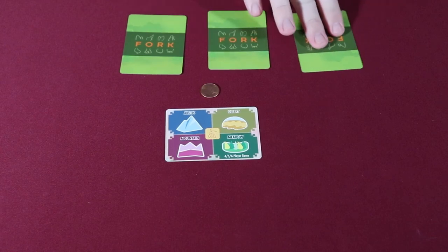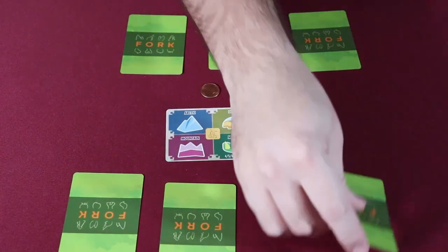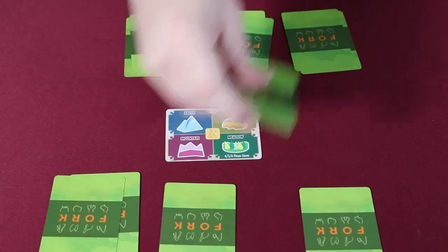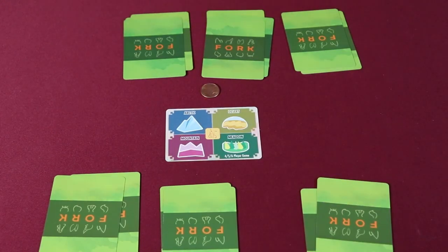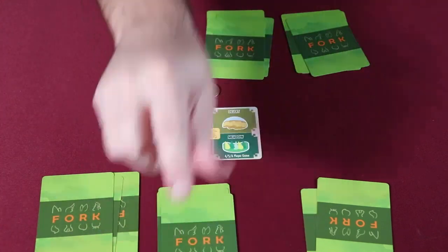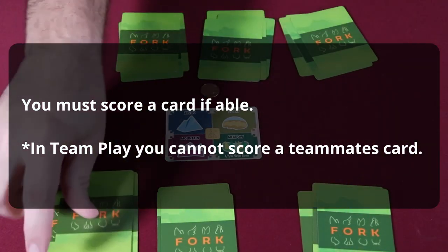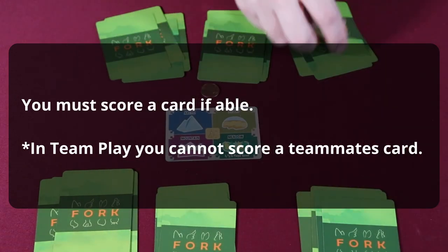When playing a 6 player game, the game is played in 3 teams of 2. Players should sit across from each other and score their hands separately throughout the course of the game. When the game ends, teammates combine their scores and the highest combined score wins the game. In all instances of play, if players can score a card, they must. The exception to this is in team play, when you may not score a teammate's card.